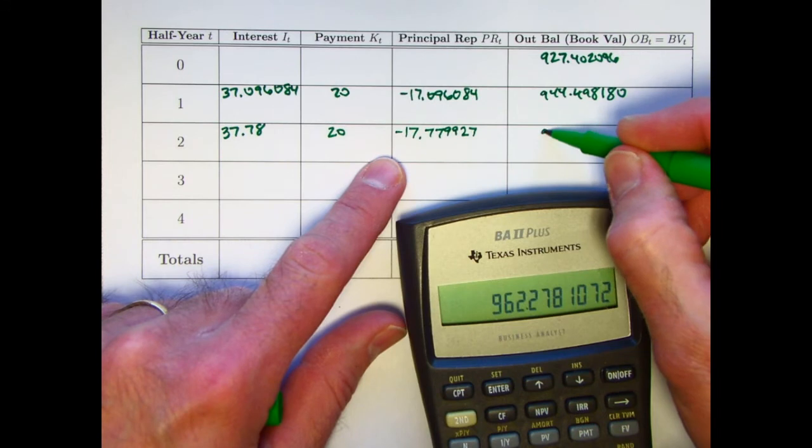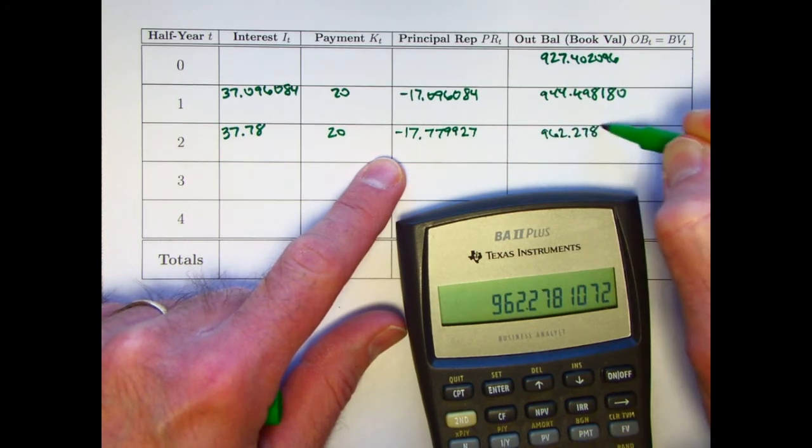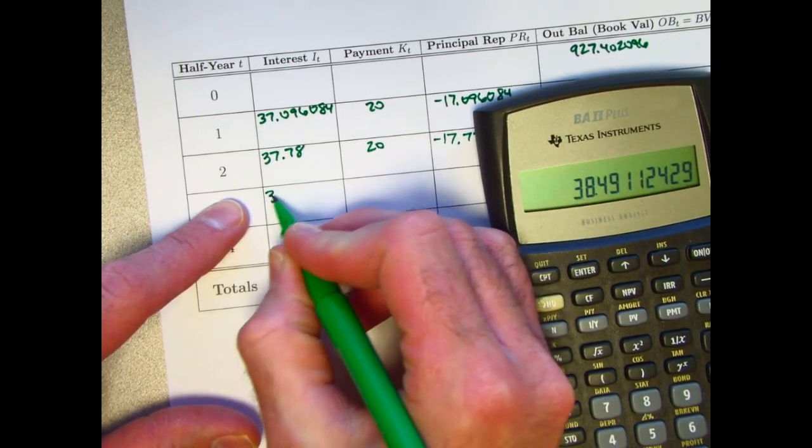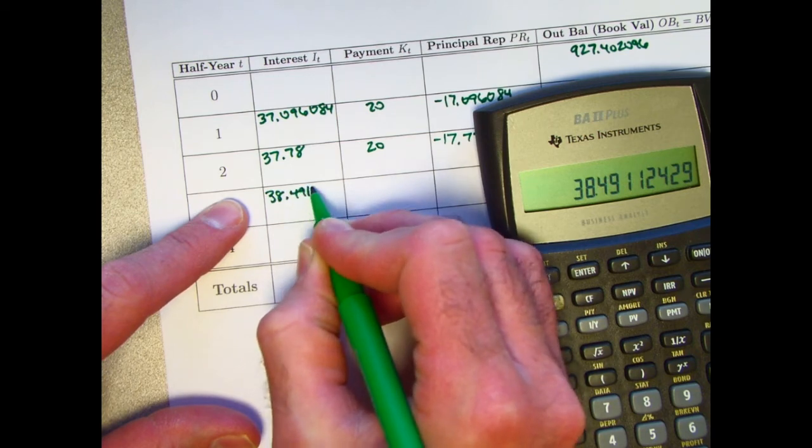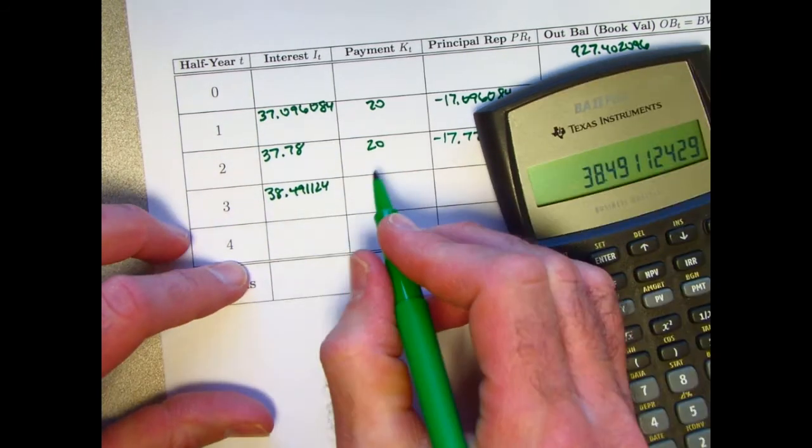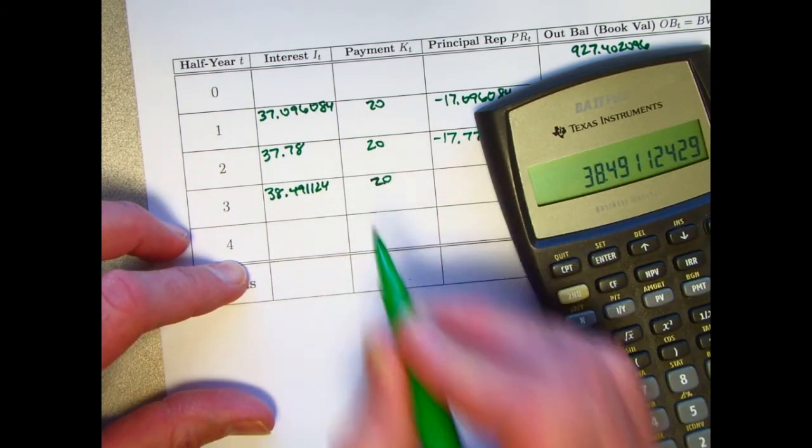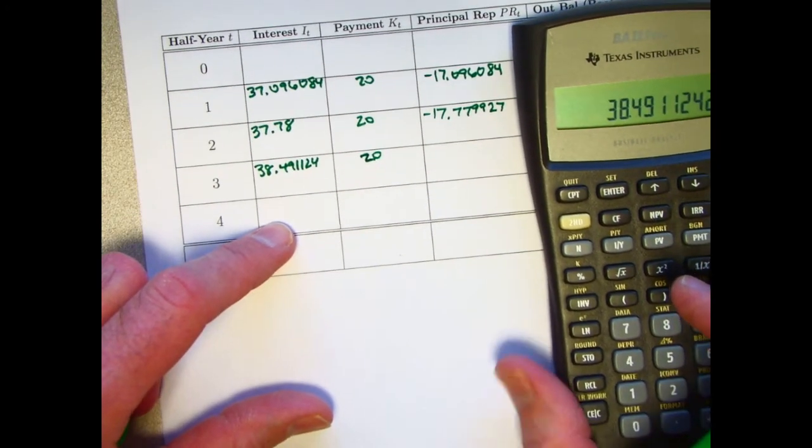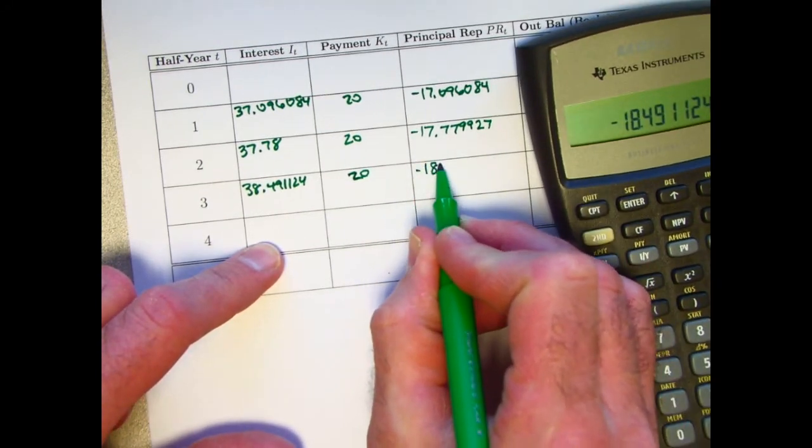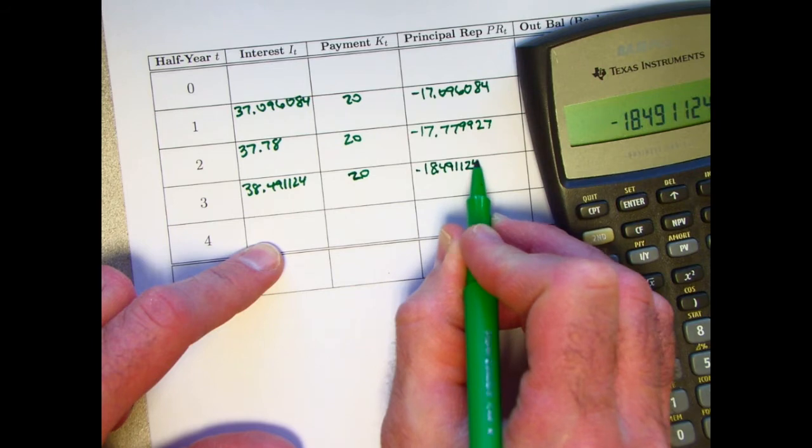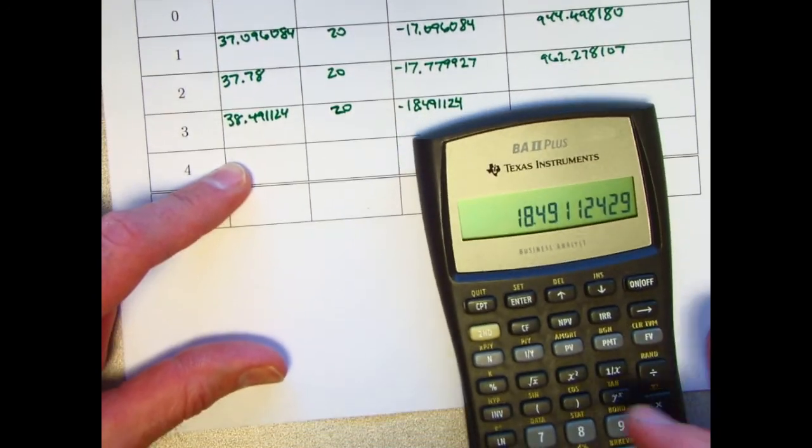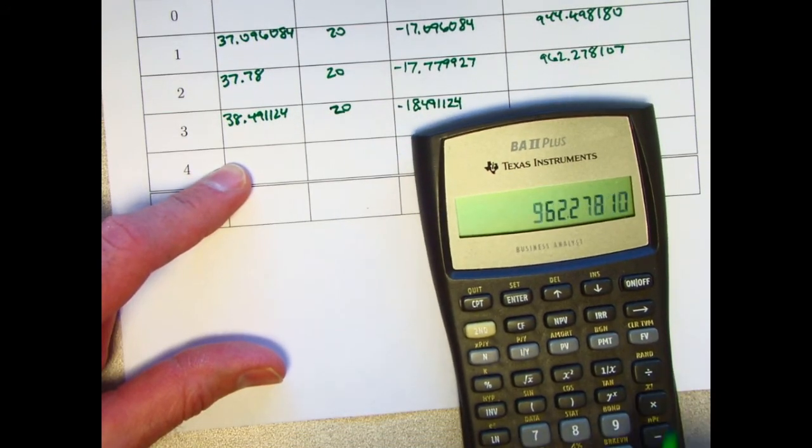Gives a new balance of 962.278107 times 4%. 38.491124. I didn't write more decimal places up there and I don't remember what it was. I won't bother writing more. I guess I kept it on my calculator and it comes from that.